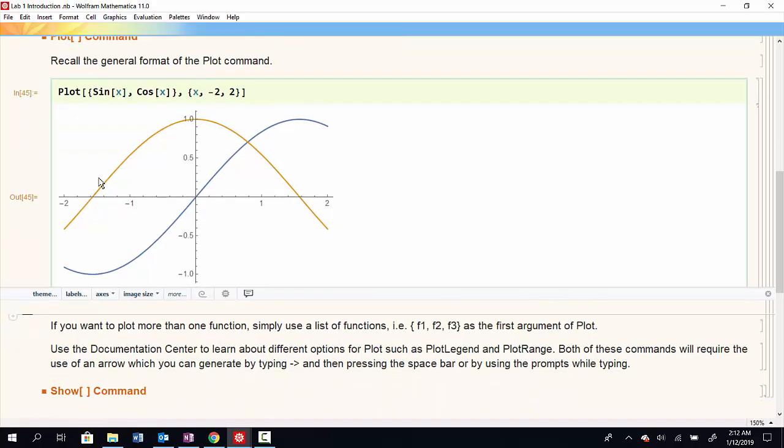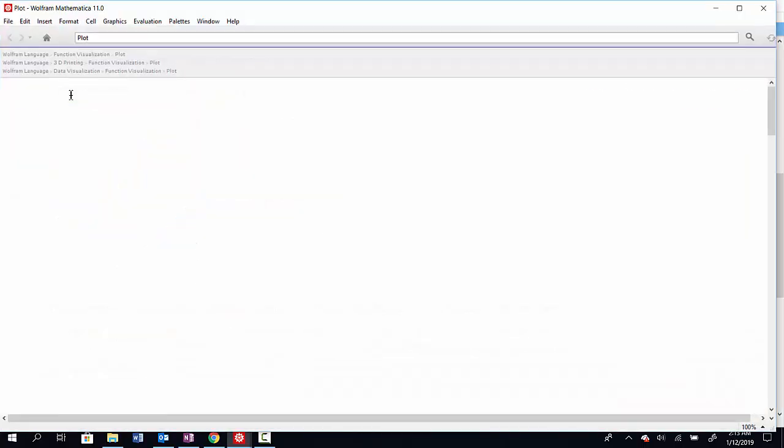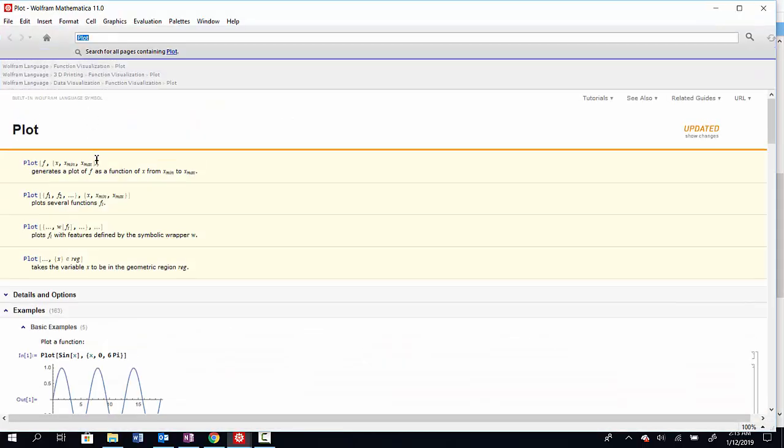Now what if I want to do other things with this plot command, like see some of the options that are available to me? Well once again I can reference the help menu. So I open my cursor on the plot command, and I'll hit F1, and it'll bring up the documentation center for that command.